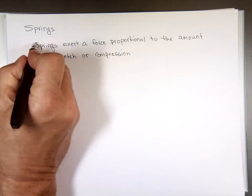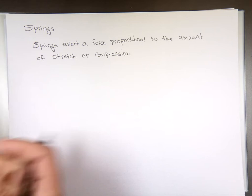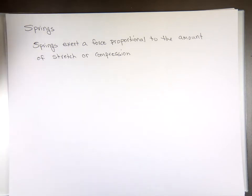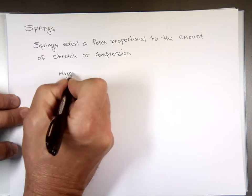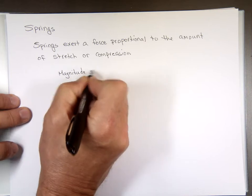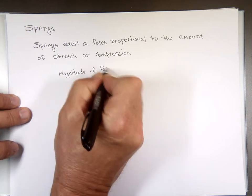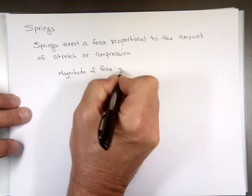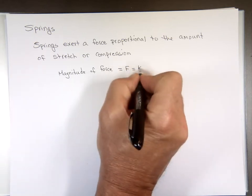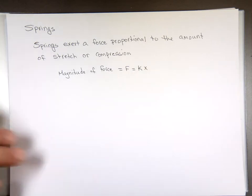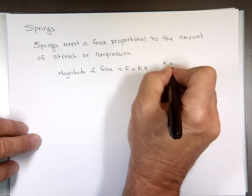So when you have a spring, a spring actually will exert a force proportional to the amount of stretch or compression. So the magnitude of that force is equal to F equals K times X. K is a spring constant. Every spring has a different constant.